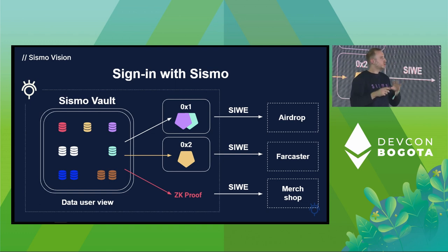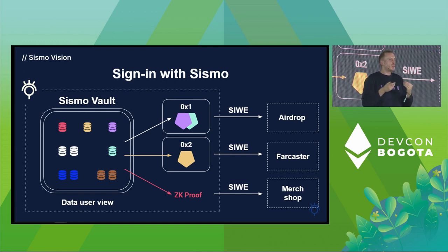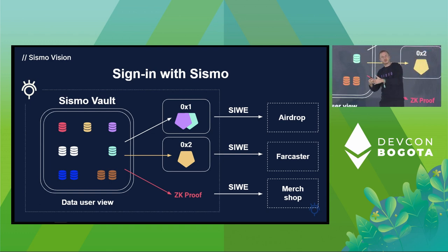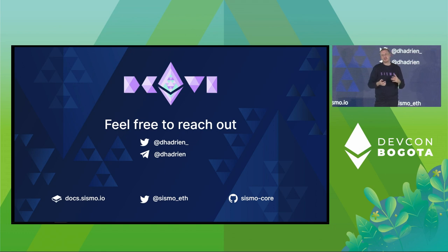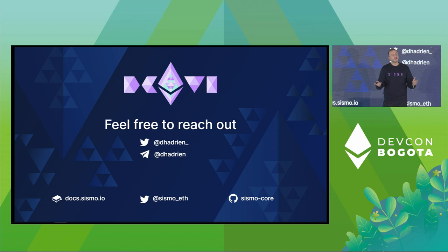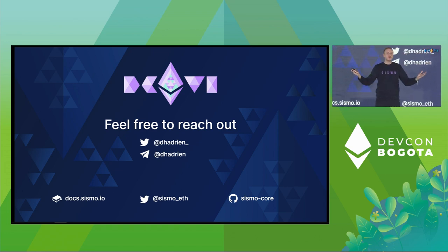We have more and more on-chain data and great projects bringing off-chain data on-chain. But today we can't really leverage it. Privacy is a real issue for identity — we're used to Web2 identities that are private because they're closed by design, but on Web3, it's public by design, which also causes issues. I hope I've shared my excitement about what we can do with sovereign identities. We're hiring — we're a small team of seven, very passionate. Everything is open source with quality documentation and code. Feel free to reach out; we're here for the long term.